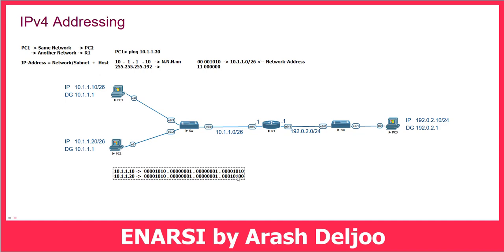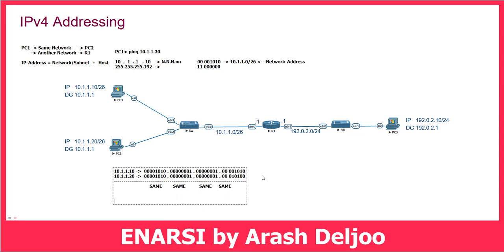Now we can compare the first 26 bits with each other. As you can see, the first 26 bits are the same — both have equal values in all compared bits, including the first two bits of the fourth octet. Because of that, we can understand that these two IP addresses are in the same network. After sending an ARP request and receiving the MAC address of PC2, PC1 can send directly to PC2 without using the default gateway. This is routing in a PC — the routing decision of whether the destination is in the local network or another network.